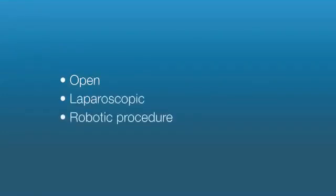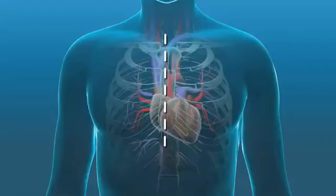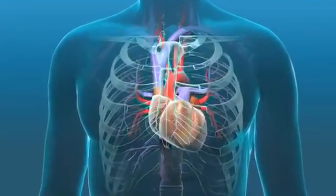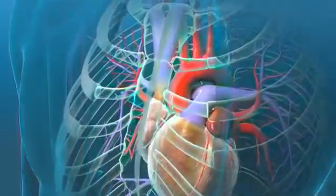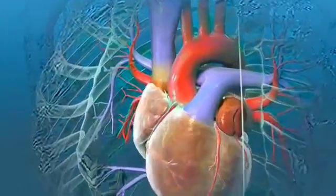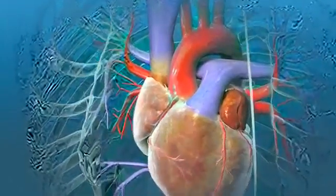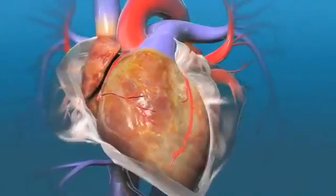Your surgeon may perform aortic valve replacement using an open, laparoscopic, or robotic procedure. If you are having an open procedure, your surgeon will begin by making an incision in the chest. The traditional incision is made in the middle of the chest, overlying the breastbone or sternum. The surgeon then separates the sternum to expose the pericardium, which is a protective membrane encircling the heart. Your surgeon will then open the pericardium to expose the heart.